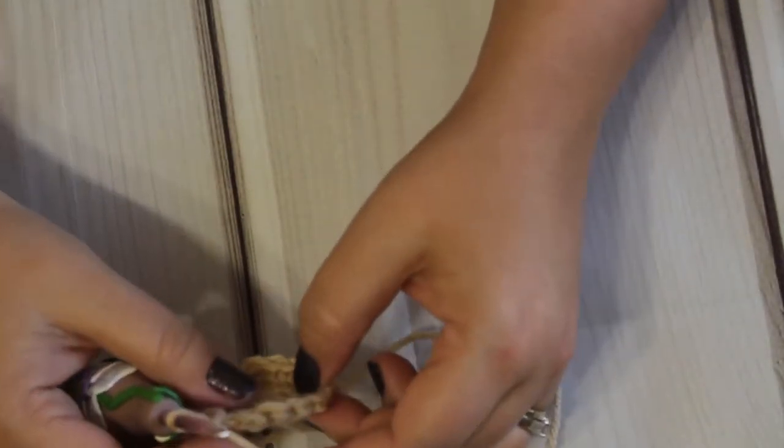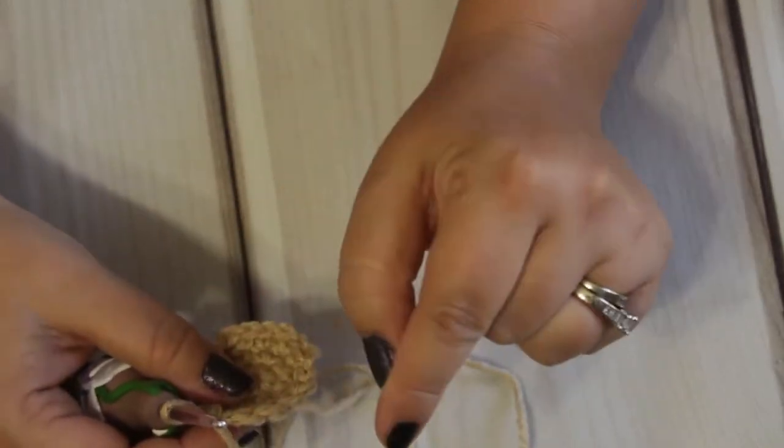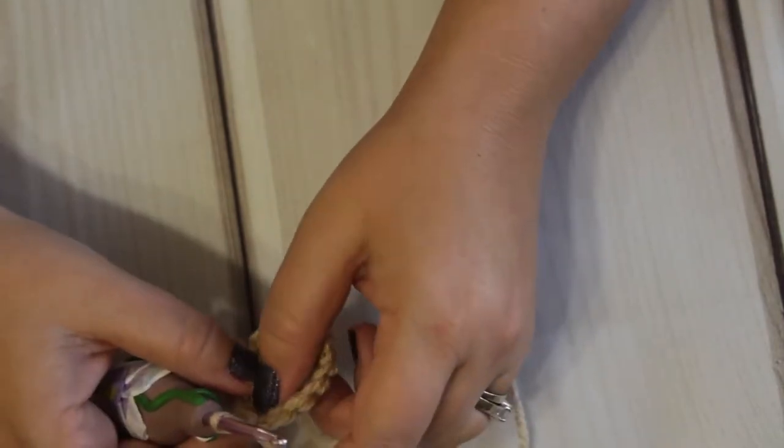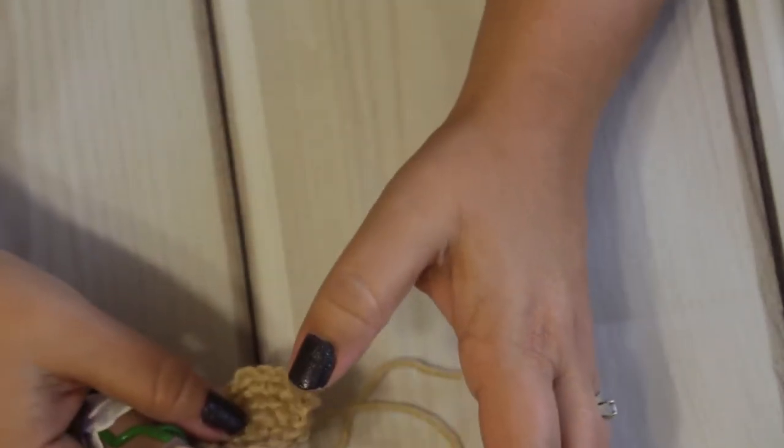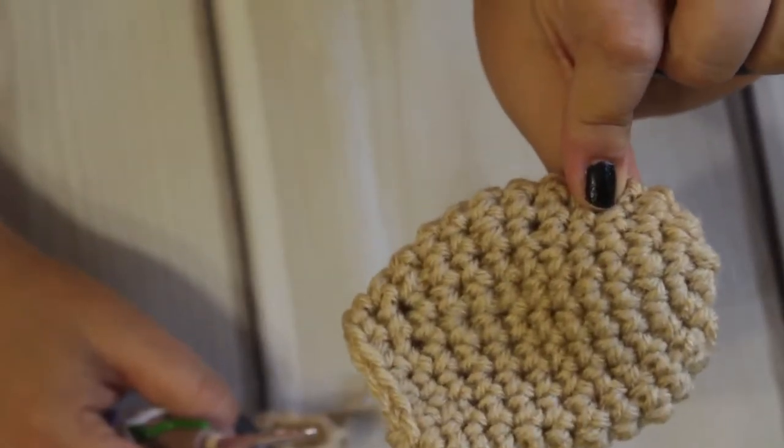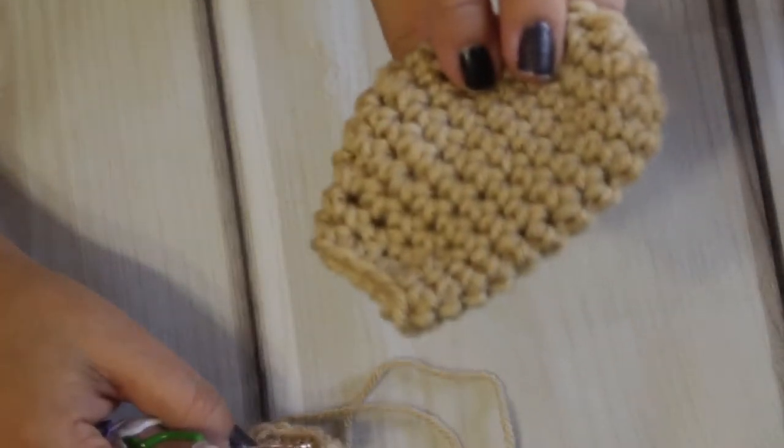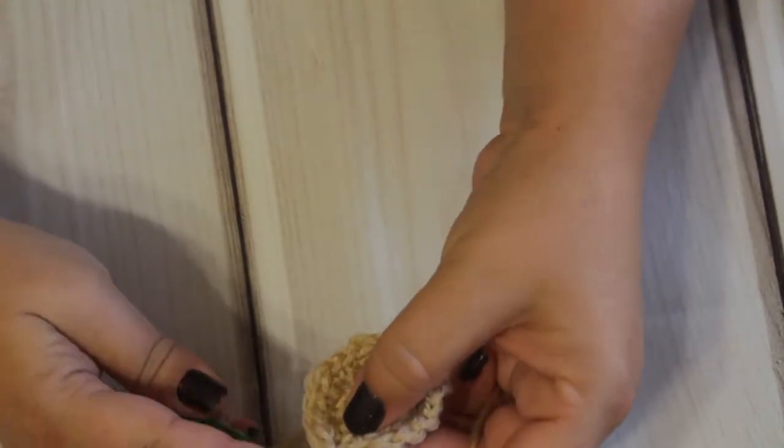All right, so we've done 18 and we are going to go ahead and slip stitch into our beginning stitch and we will chain one. Now for rounds four through eight we are just going to be doing one single crochet in each of the stitches. And depending on how tall of a chair sock you want, you know some people like them shorter, some people like them longer, you can change how many rows you do. This worked best for what I was looking for in my chairs.